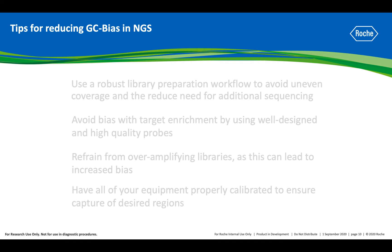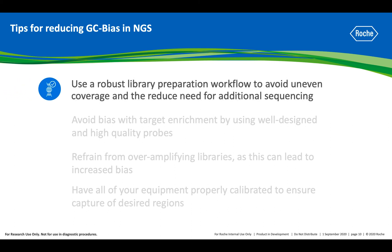It's always important to minimize coverage bias because uneven coverage can require additional sequencing to reach the desired coverage of all the regions of interest. To increase coverage uniformity and decrease bias across GC or AT-rich regions, consider utilizing a robust library preparation workflow that provides high complexity of your sample and avoids uneven coverage.